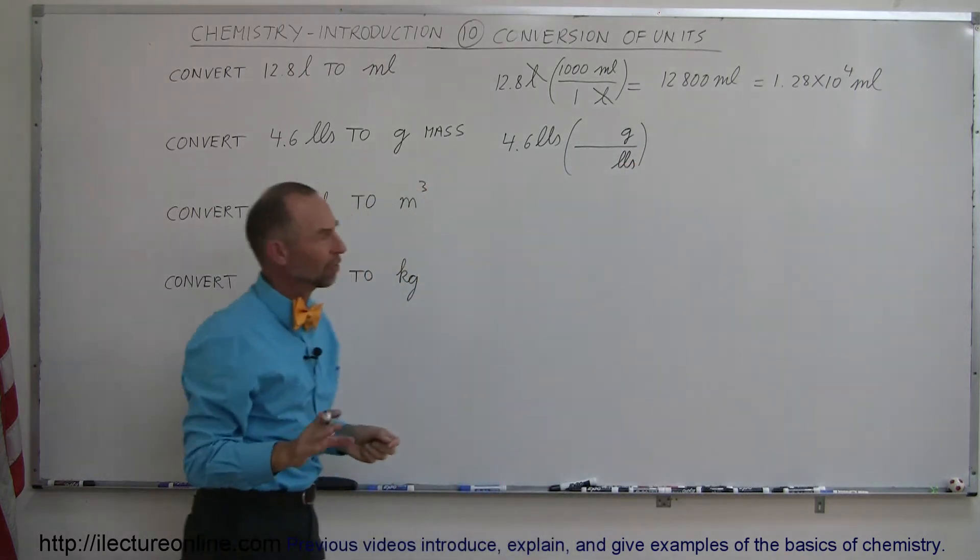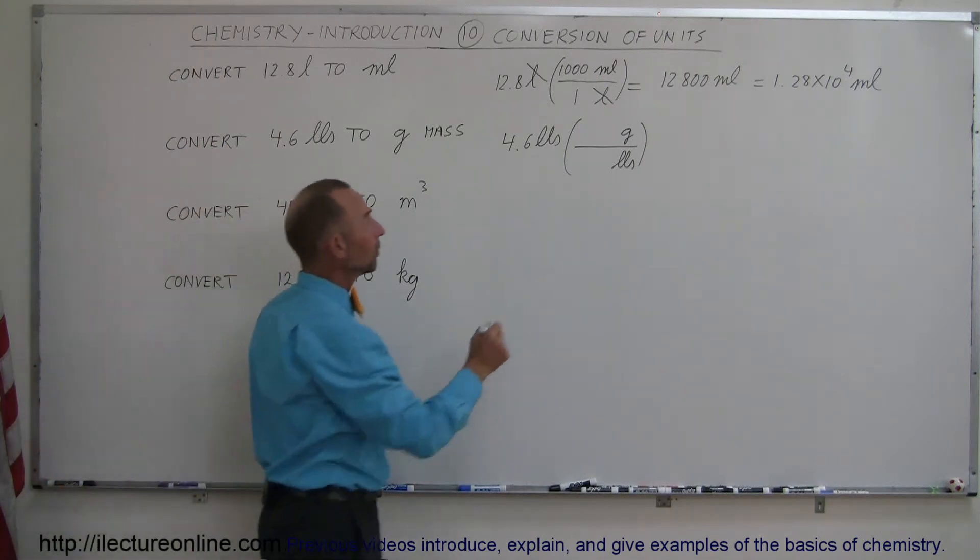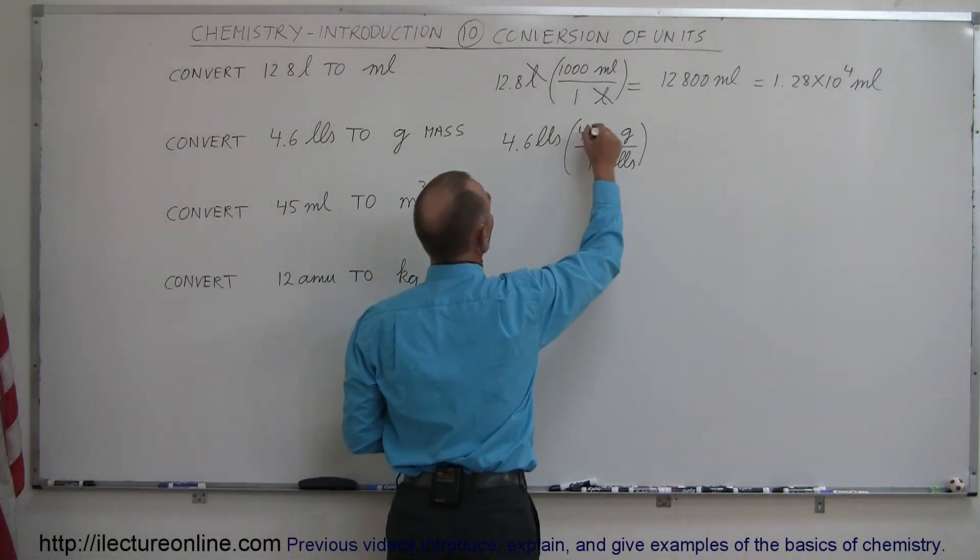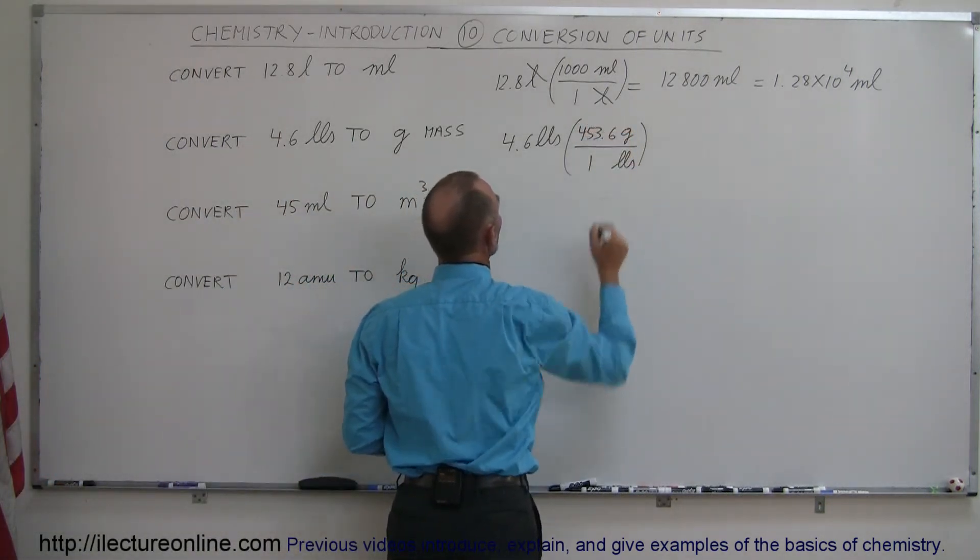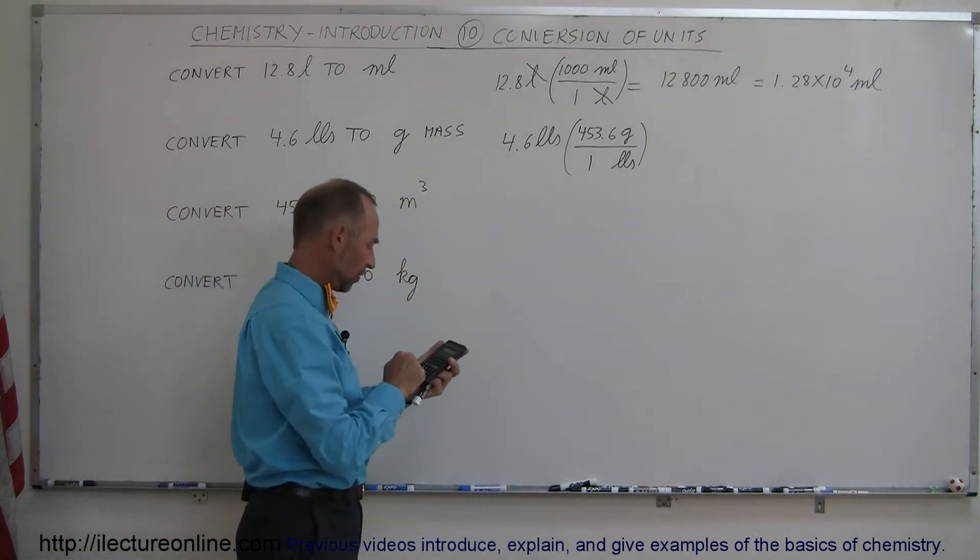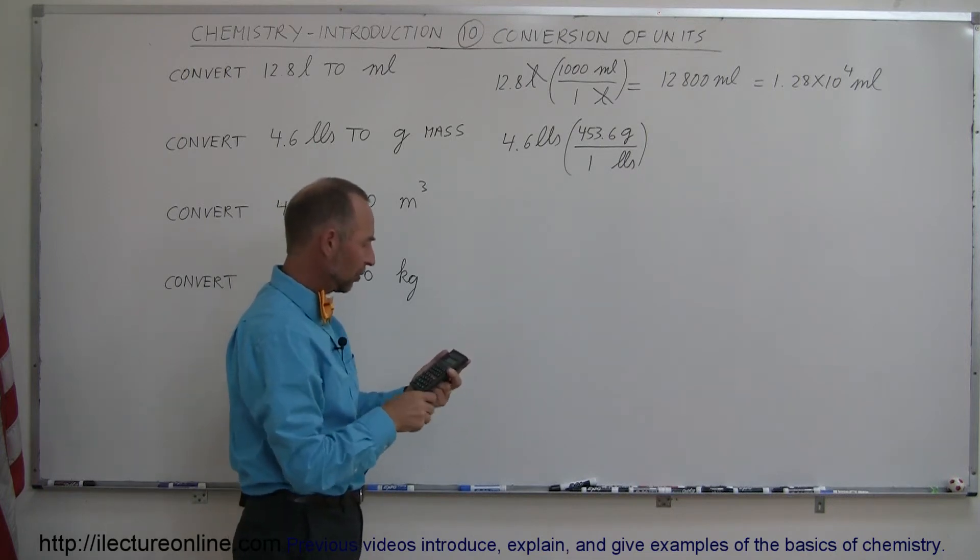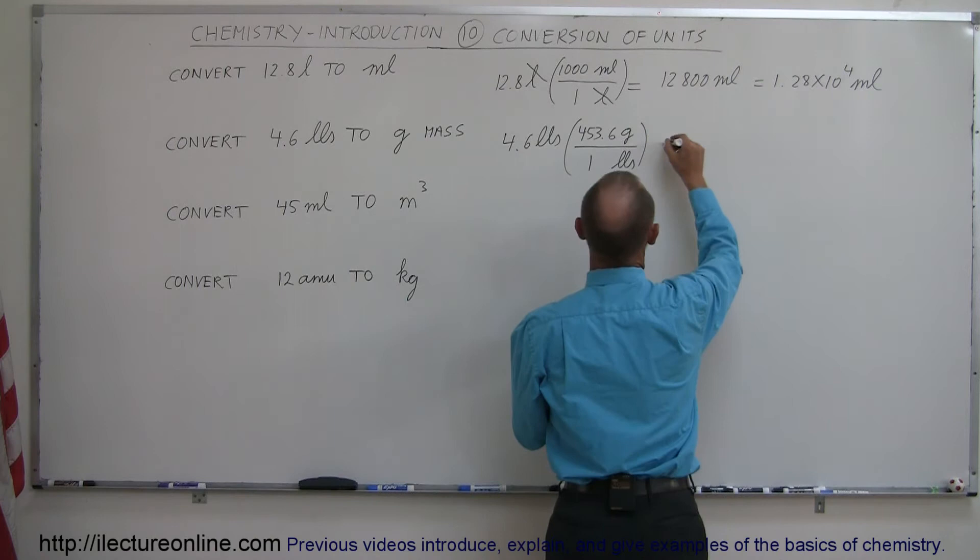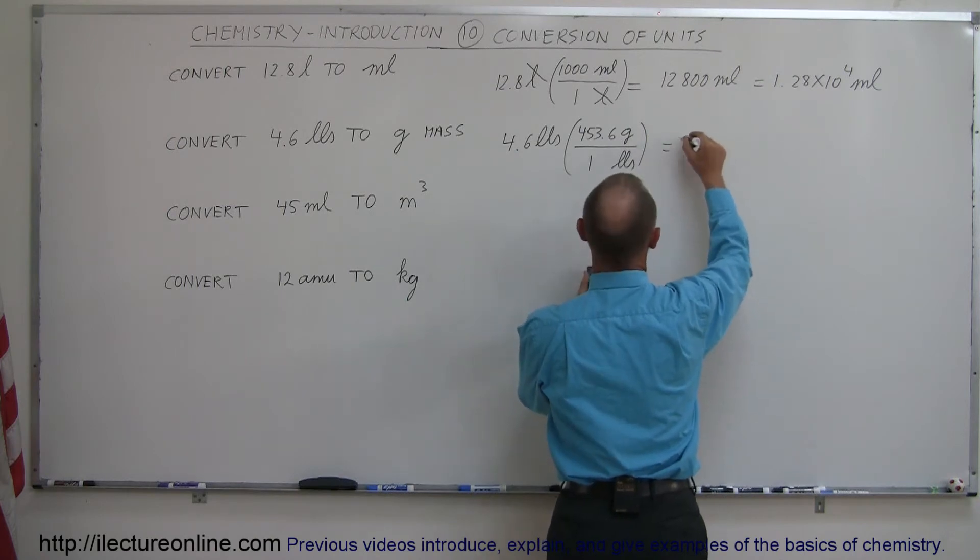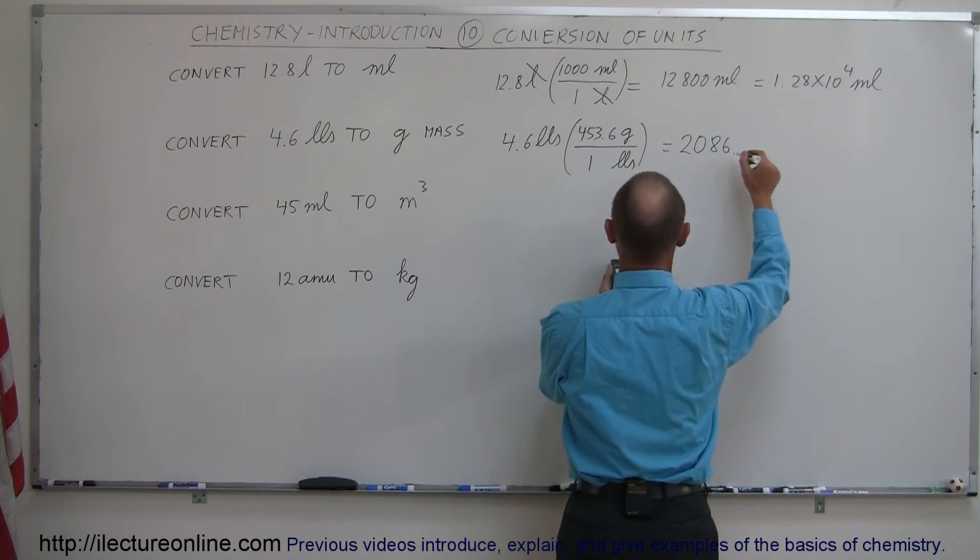Remember, grams is mass, pounds is weight, but it's this mass-weight equivalent. One pound is 453.6 grams. Now we go ahead and we can convert. So 4.6 times 453.6 equals 2,086.56.